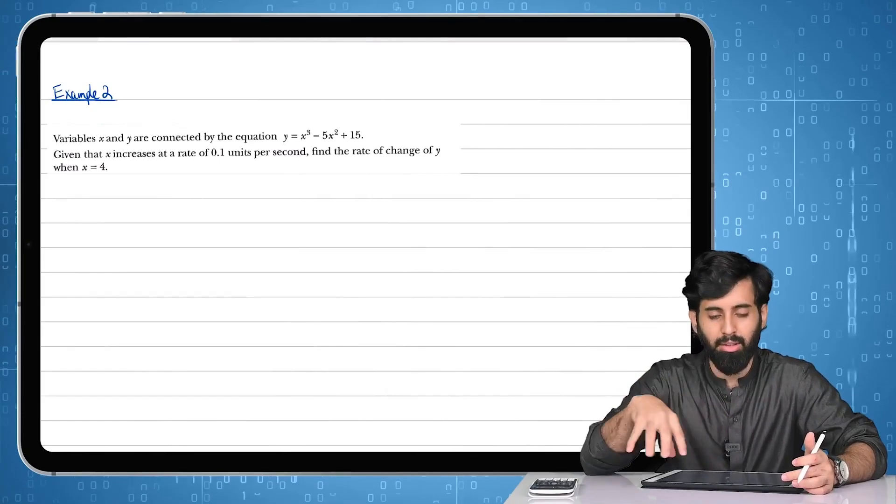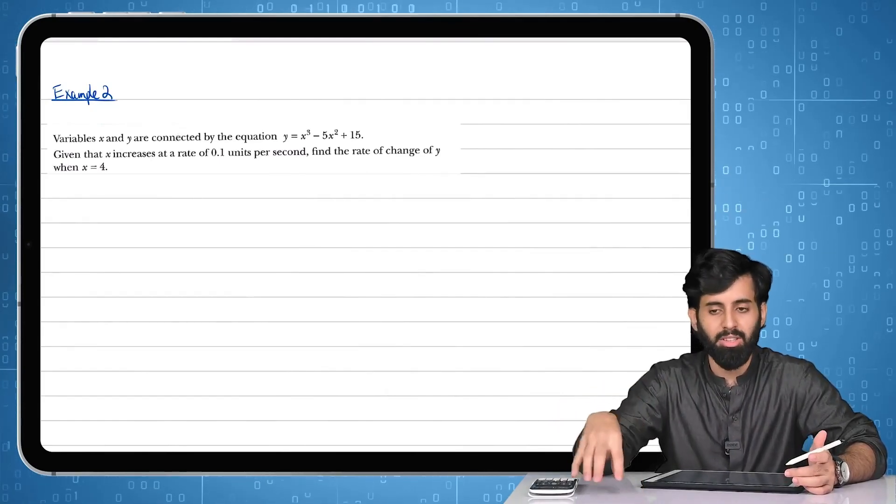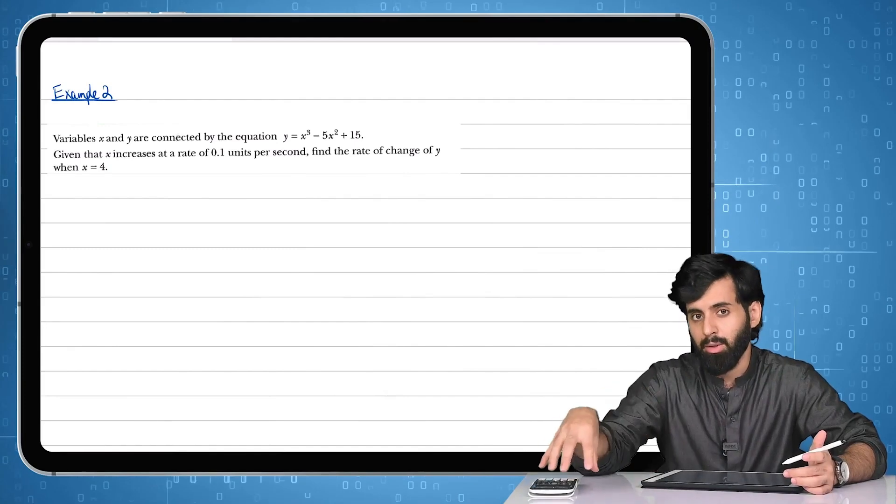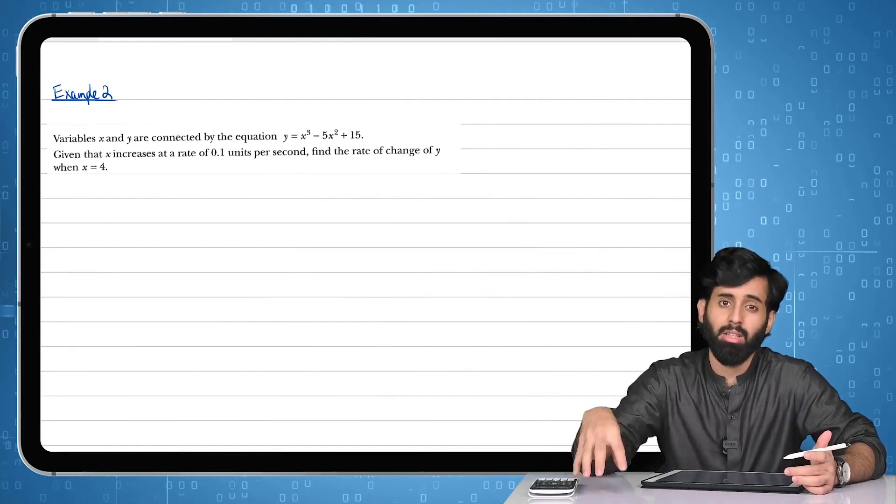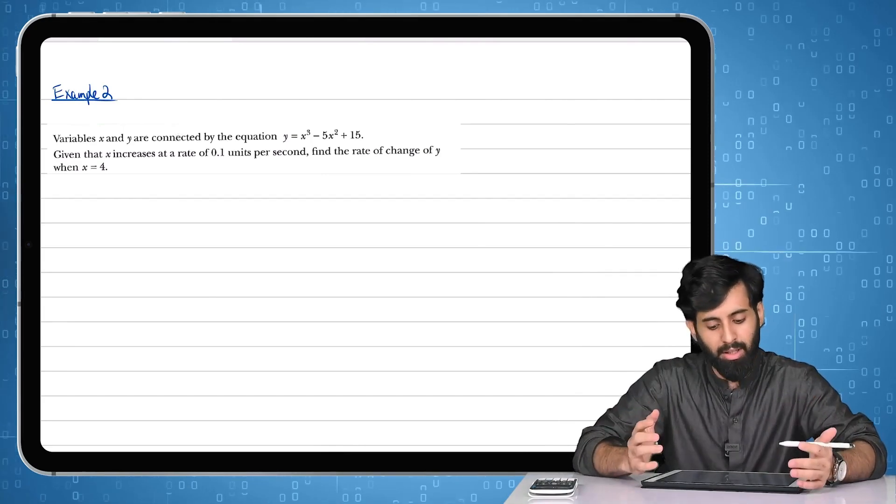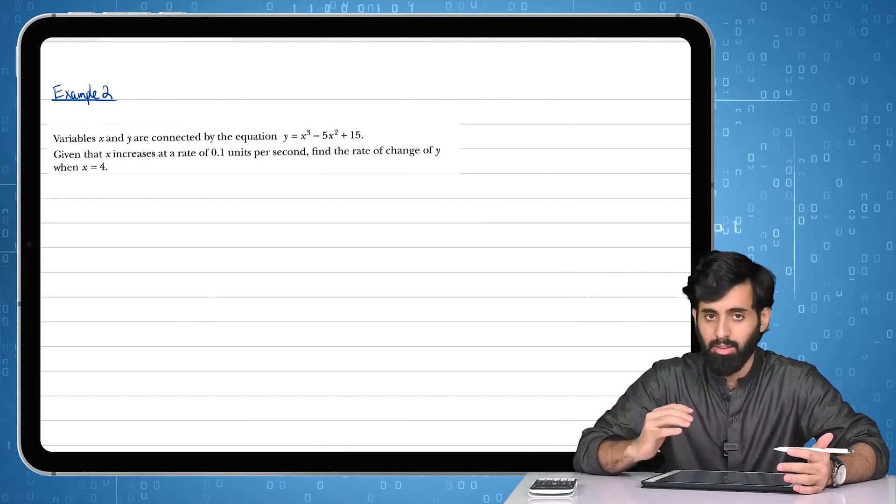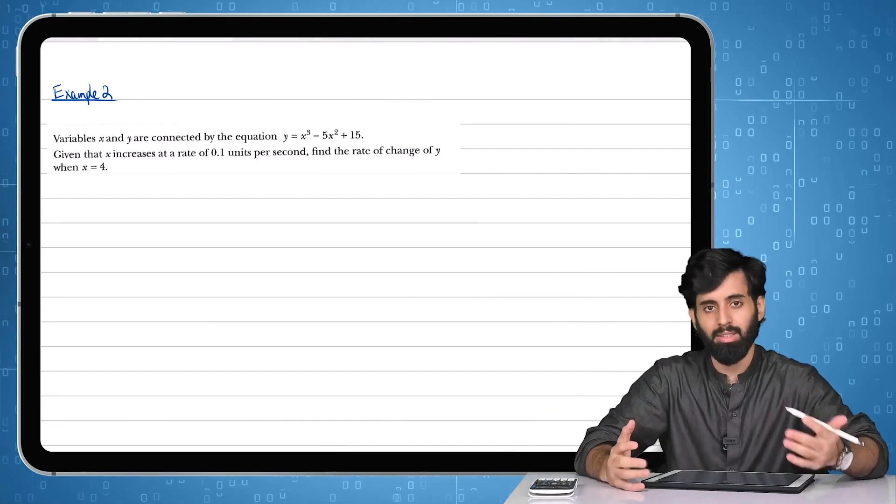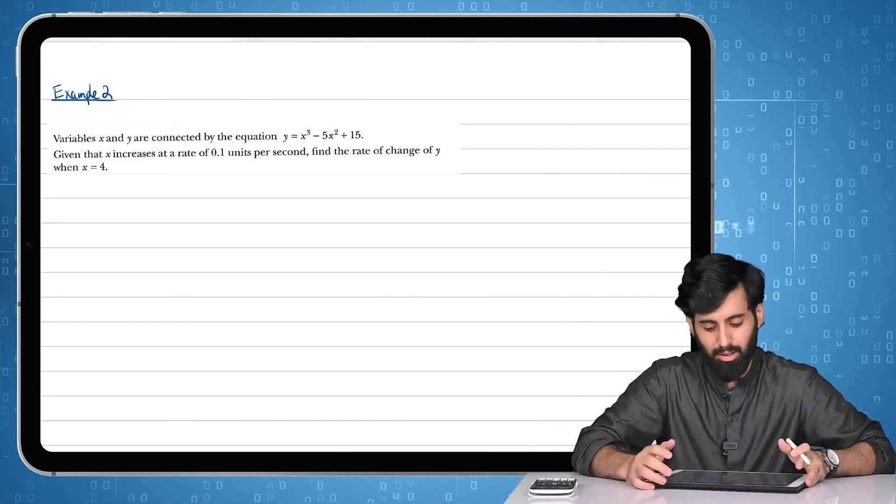Basically, if you guys remember from the earlier example, I said that if the radius is increasing, so because of that radius of any solid, let's say a cone, if the radius of a cone is increasing, it's going to cause the volume to increase and the surface area to increase also. That's exactly what we're going to do in this particular example. We're going to find out how exactly do you measure the change in another variable which is being caused because of a change in a certain variable. In short, we're going to find out what happens to the rate of change of y with respect to time when x is changing with respect to time.